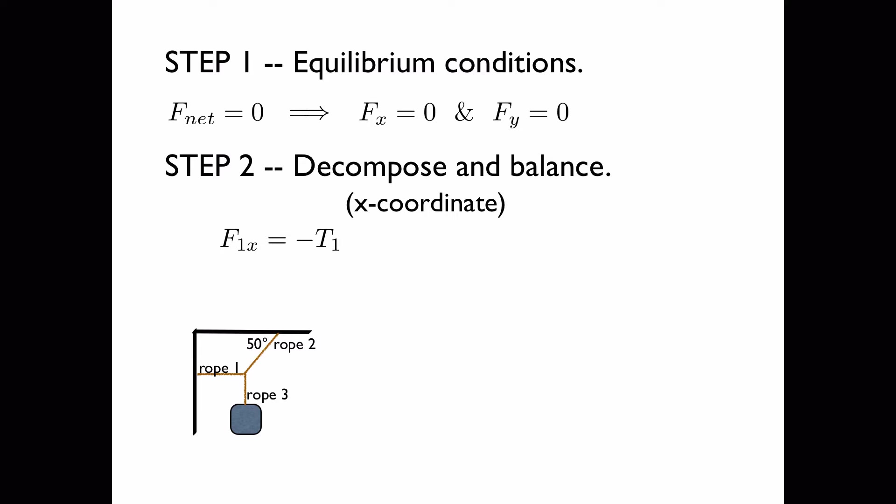Force 1 is only in the x direction, and it pulls to the left. Therefore, the x component of force 1 is equal to minus the tension in rope 1.